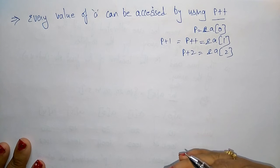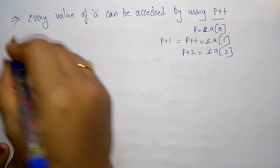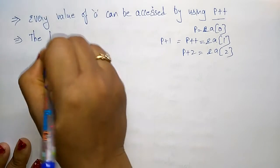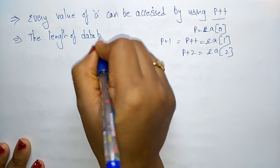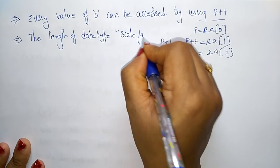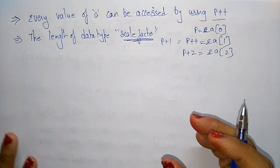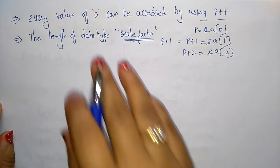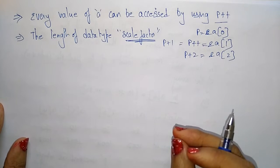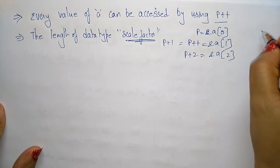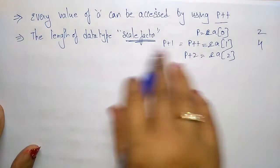When a pointer is incremented, its value is increased by the size of the data type that it points to. The length of the data type is called the scale factor — this term you have to remember. When calculating the address of an element in an array, you need to know the scale factor. Scale factor is the size of the data type: for int it is 2, for float it is 4.